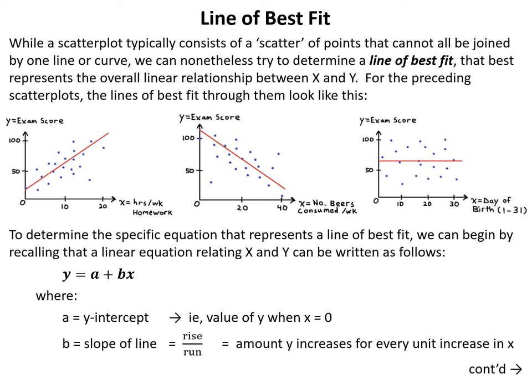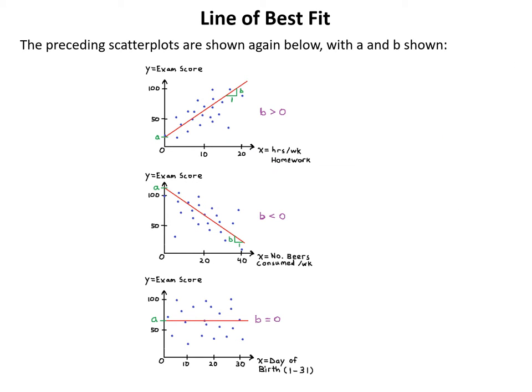To determine the specific equation of a line of best fit, we recall that a linear equation relating x and y is written as y equals a plus bx, where a equals the y-intercept (the value of y when x equals 0), and b equals the slope — the rise over the run, or the amount y increases for every unit increase in x. The scatter plots show a as the y-intercept and b indicated by the right-angle triangle showing rise over run.